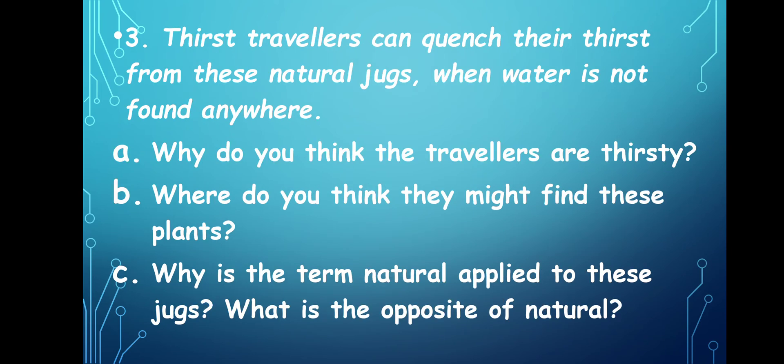Now let's go to the third one. 'Thirsty travelers can quench their thirst from these natural jugs when water is not found anywhere.' Why do you think the travelers are thirsty? There might be places where we cannot find water. If travelers have been traveling long distances and don't find water around them, then if they see a pitcher plant they can drink from it.